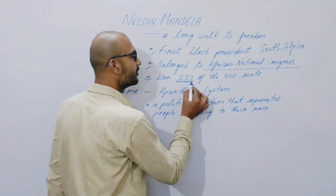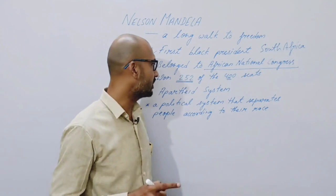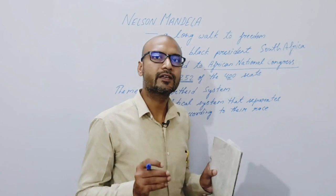Kaisa wo president ban gaye? Unhone 252 seats 400 mein se 252 seats jeeti, aur is tarah se woh black president choose kiye gaye. Ab yeh chapter ka theme kya hai, yeh bhi humein samajhna hai.